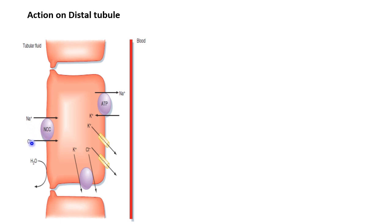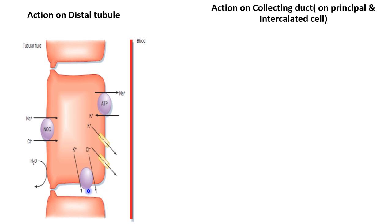There is a symporter which reabsorbs both sodium and chloride with the help of aldosterone and moves them inside the tubular cell. From the tubular cell, sodium is reabsorbed into the blood by the sodium-potassium ATPase pump. Chloride passes through the paracellular pathway to the blood, along with the symporter potassium.